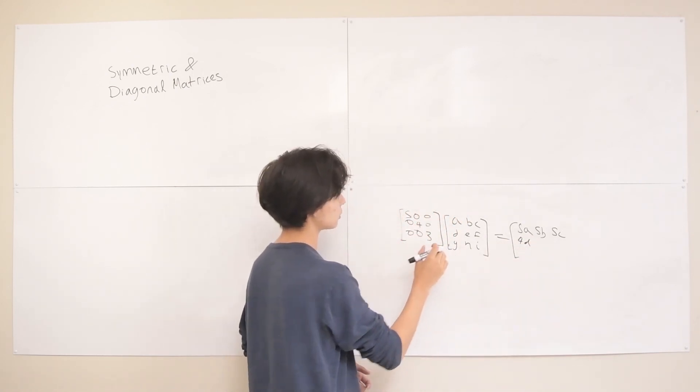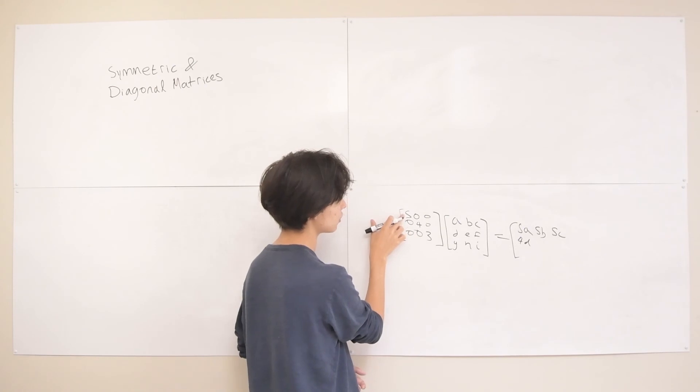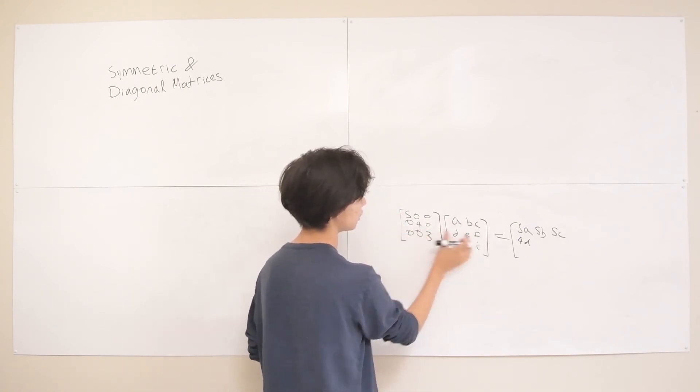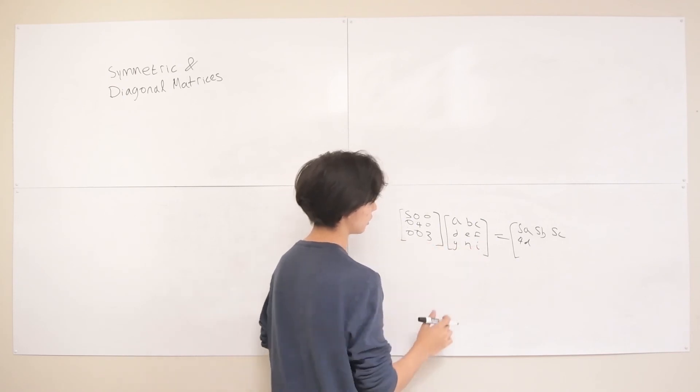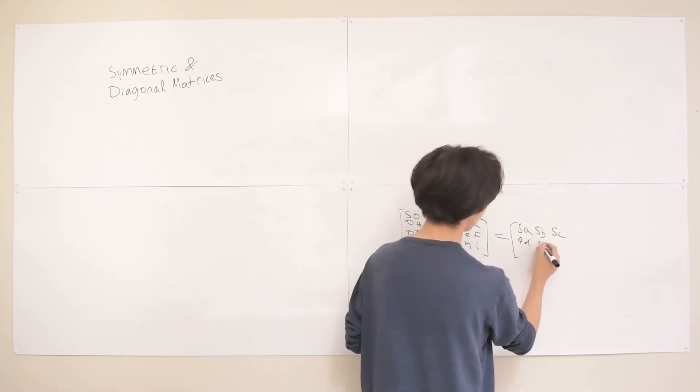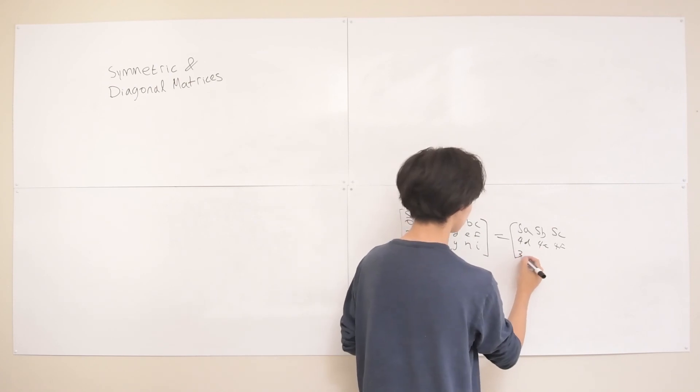So basically, we just multiply each row by its corresponding coefficient here in the diagonal matrix. So everything here gets multiplied by 5, everything here gets multiplied by 4, everything here gets multiplied by 3.